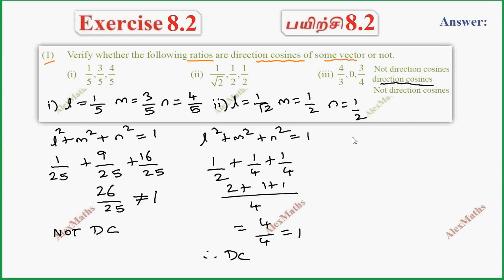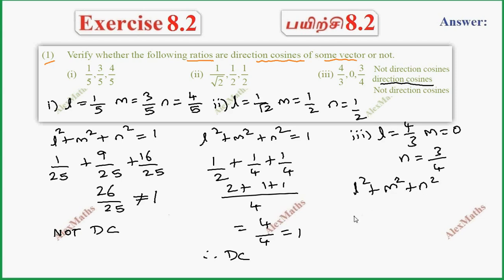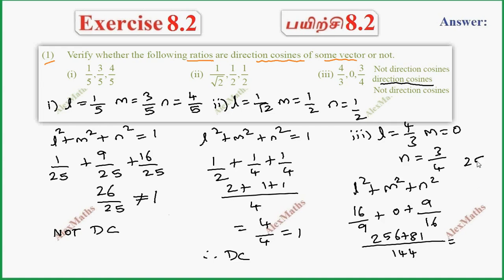Third subdivision: L = 4/3, M = 0, N = 3/4. Substituting into L² + M² + N²: 16/9 + 0 + 9/16, which gives 256/144 + 81/144 = 337/144. This is not equal to 1, so this is not direction cosines.